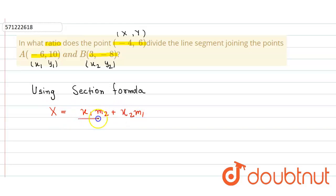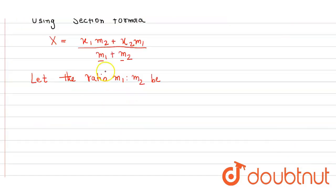So here first we consider the ratio. Let the ratio m1 to m2 be k is to 1. So that's our ratio that we have considered.